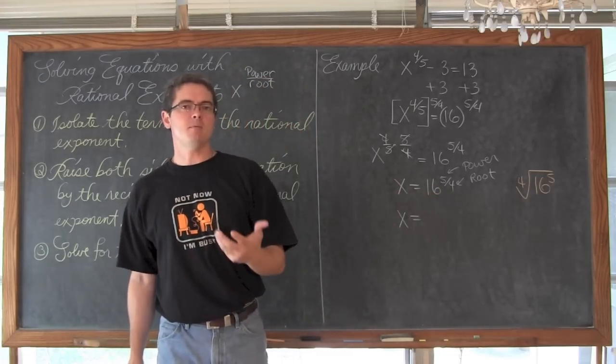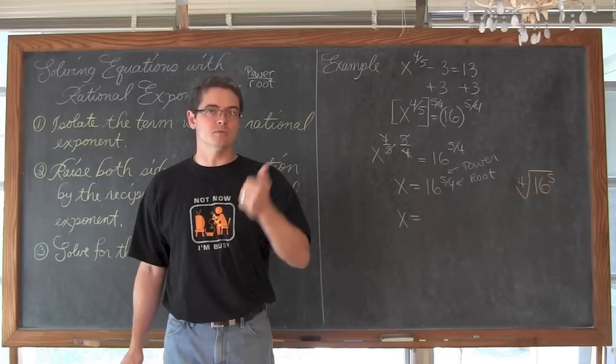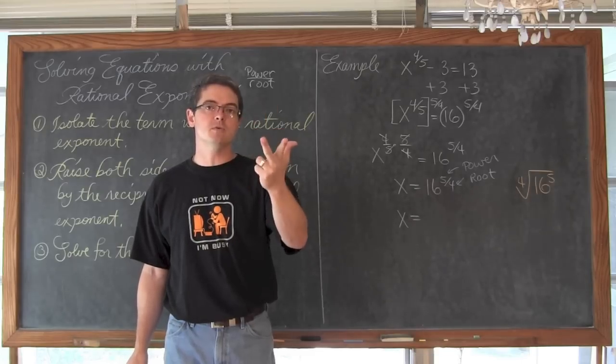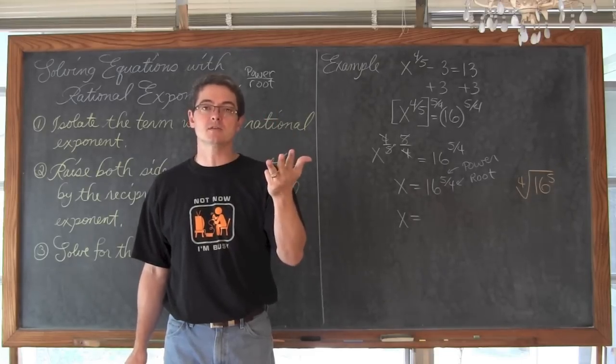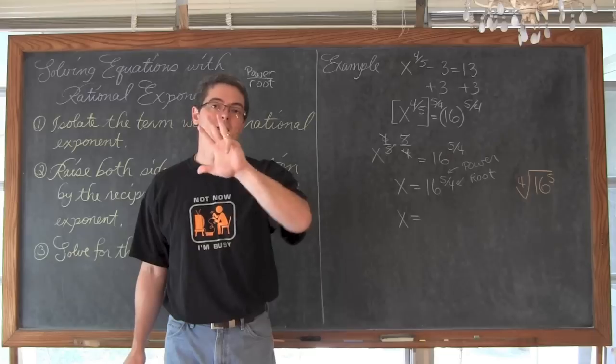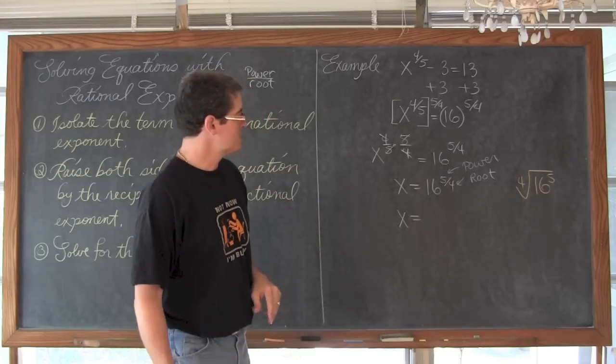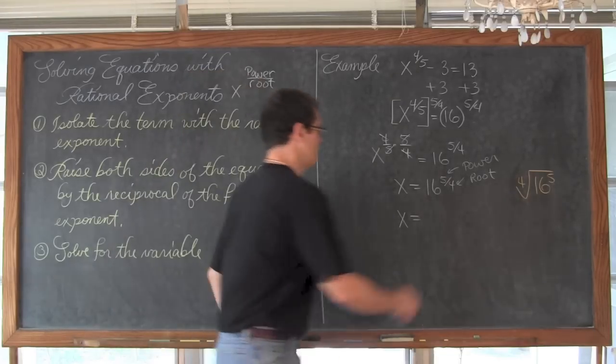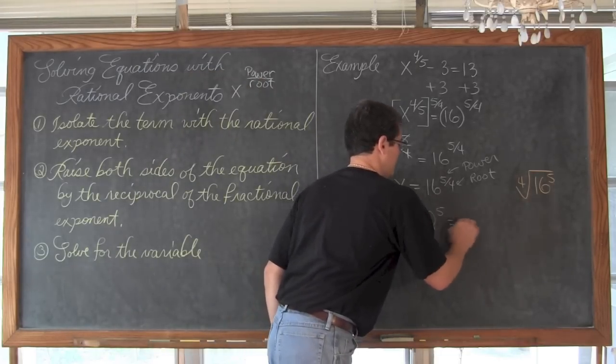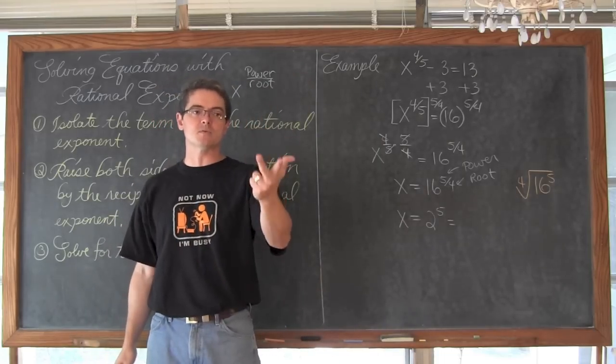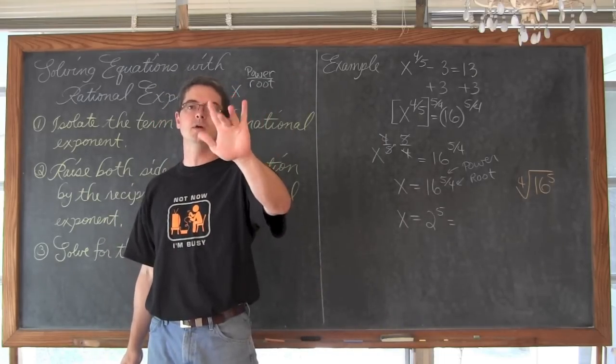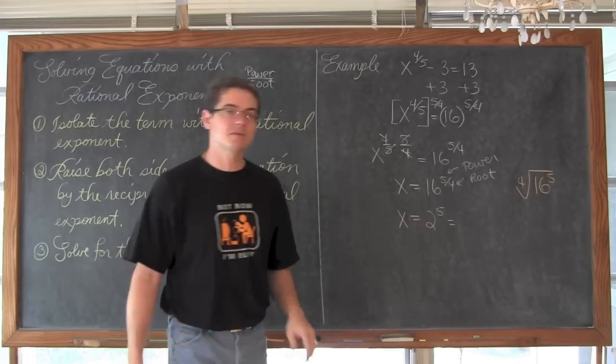So again, the fourth root of 16, probably a small number. So let's try two. 2 times 2 is 4, times 2 is 8, times 2 is 16. So 2 to the fourth power is 16. So the fourth root of 16 is 2. So we have 2 to the fifth, and then 2 to the fifth power, 2 times 2 is 4, times 2 is 8, times 2 is 16, times 2, that is 5 of them, is equal to 32.